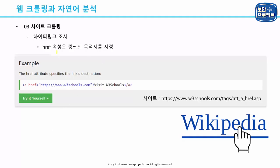하이퍼링크 조사에 대해서 한번 살펴보도록 하겠습니다. 우리가 여태까지 BeautifulSoup을 활용하는 방법에 대해서 아주 간단하게 살펴봤어요. 더 많은 기능이 있고 더 여러 가지 목적으로 사용할 수 있겠지만, 우리가 하이퍼링크를 조사해서 웹크롤링 하는 것 자체에 의미가 있기 때문에 여기서는 하이퍼링크 조사를 하도록 하겠습니다.